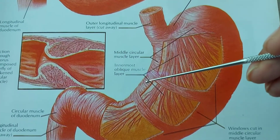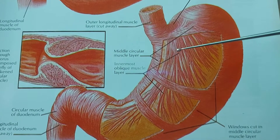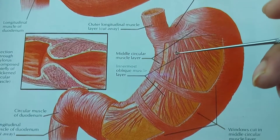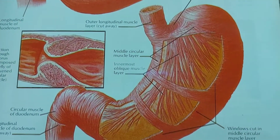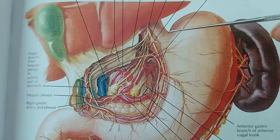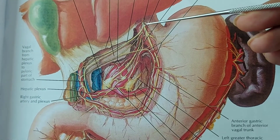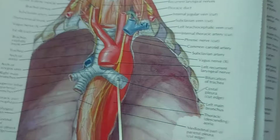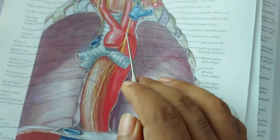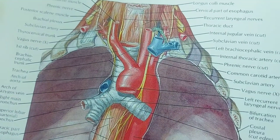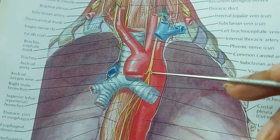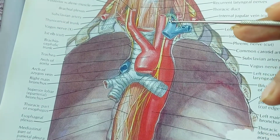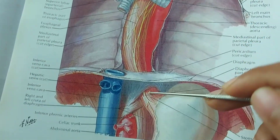These muscle fibers are innervated through the vagus nerve and the sympathetic nerve. Here we see the nerve supply of the stomach. The parasympathetic supply comes from the vagus nerve. There are two vagus nerves. The left vagus nerve passes through the mediastinum and along the anterior surface of the esophagus, forming the anterior vagal trunk.